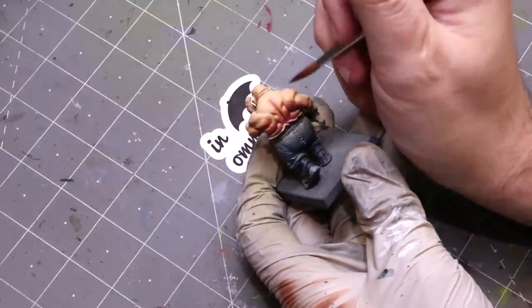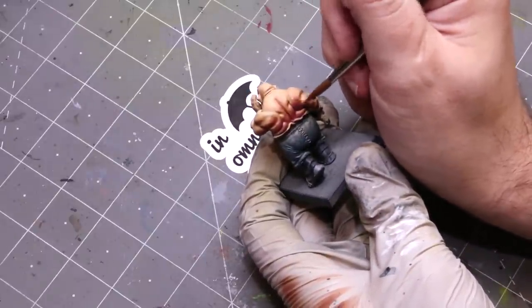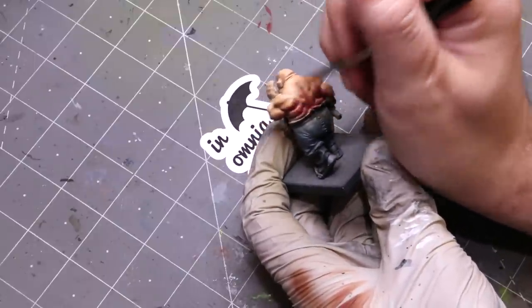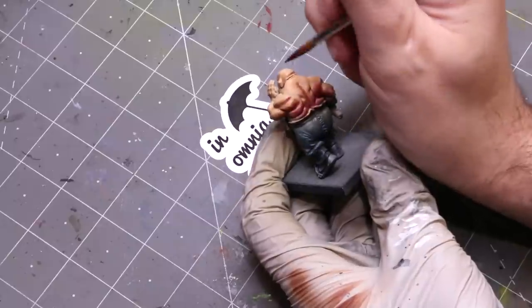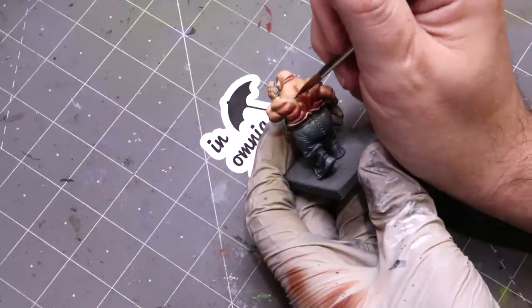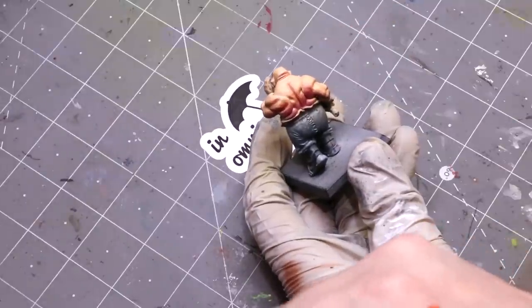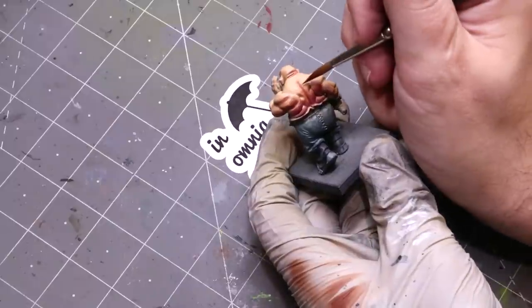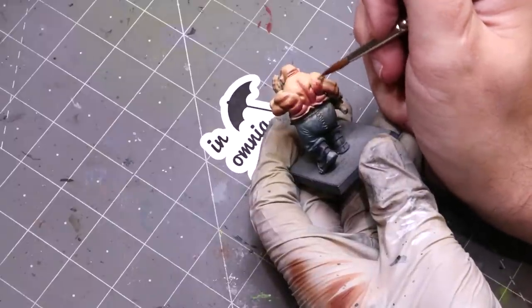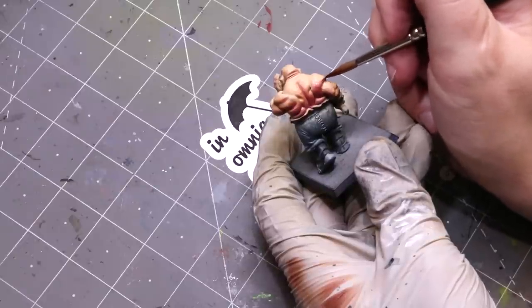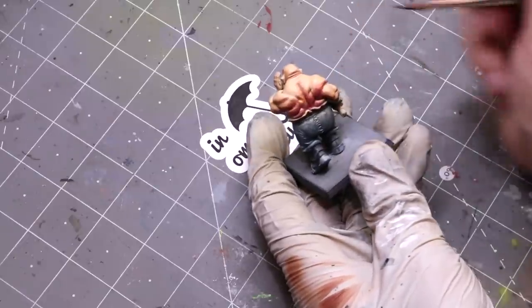So with the glaze we wick off all the excess, and then we're just going to come in and bring that over and just glaze down. Maybe we'll get some of those upper muscle structures, some of these deeper recesses, but the goal here is to mostly still leave the skin color being dominant.